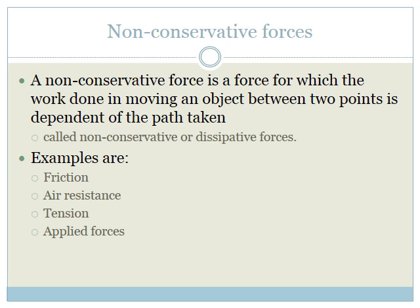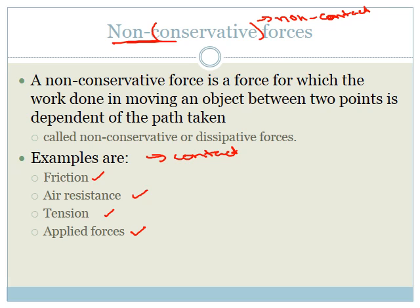Since conservative forces are the non-contact forces, obviously your non-conservative forces are going to be your contact forces. Examples are friction, air resistance, tension, and any applied forces. So if you're in contact with something and you're applying a force, then it's a non-conservative force. But if the force acts over a distance, then it is a conservative force. You really need to know the difference between these and be able to apply them.